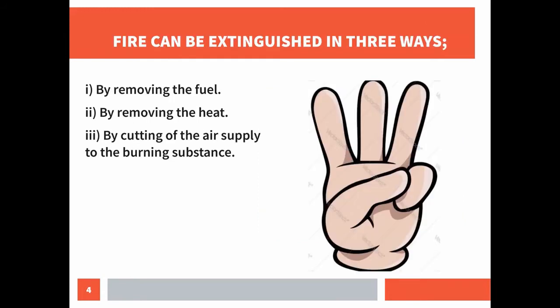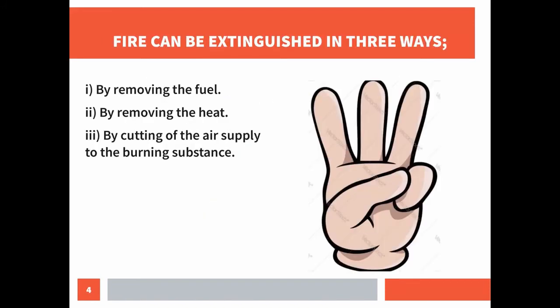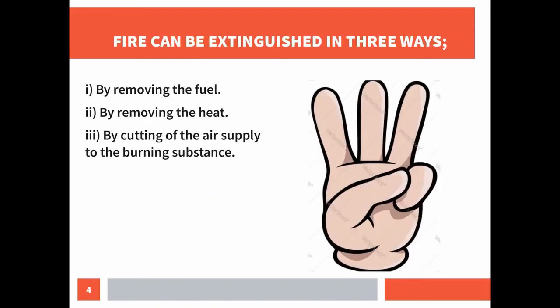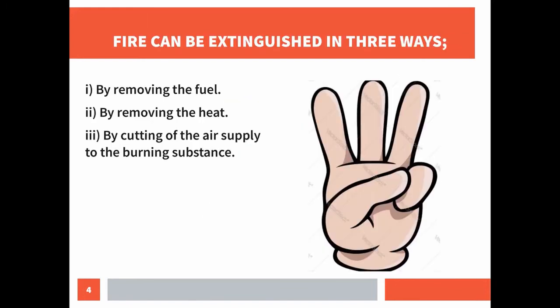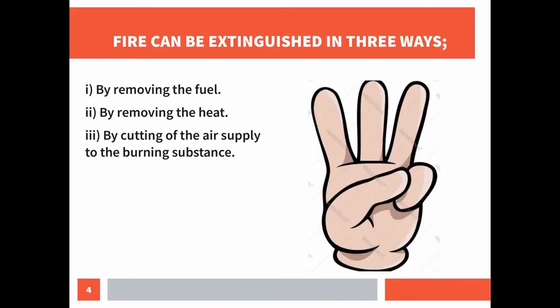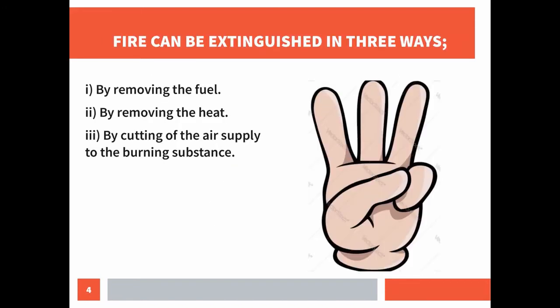Any fire needs three things to be present: a combustible substance, air, and heat. We can extinguish fire by removing any one of these three. We can extinguish fire by removing the fuel, by removing the heat, or by cutting off the air supply to the burning substance.